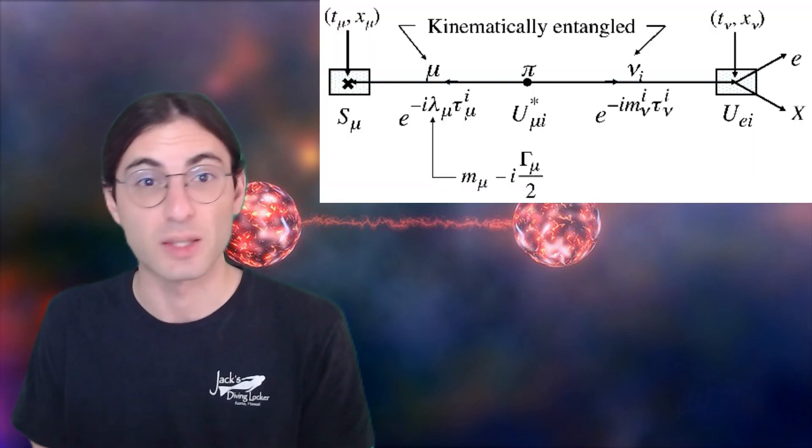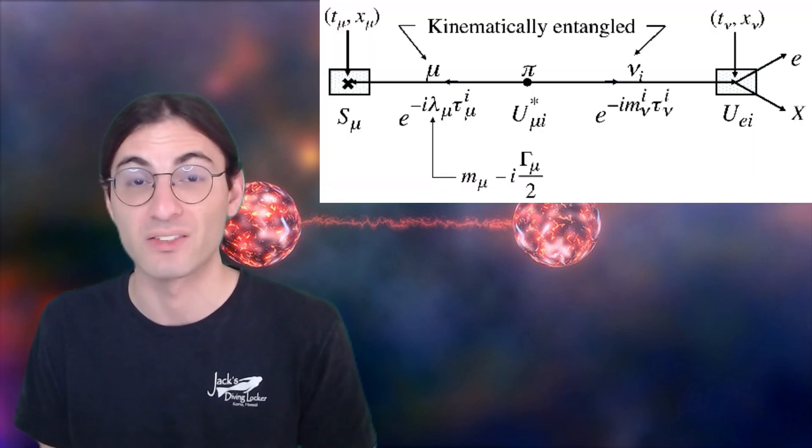And there are three possible options corresponding to the three mass values that neutrinos can take. So that means that the muon's momentum is entangled with the mass state of the neutrino.